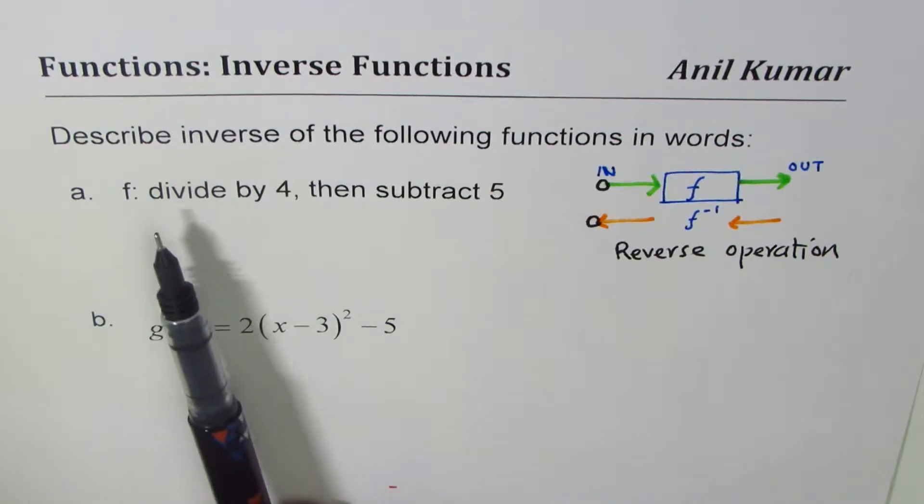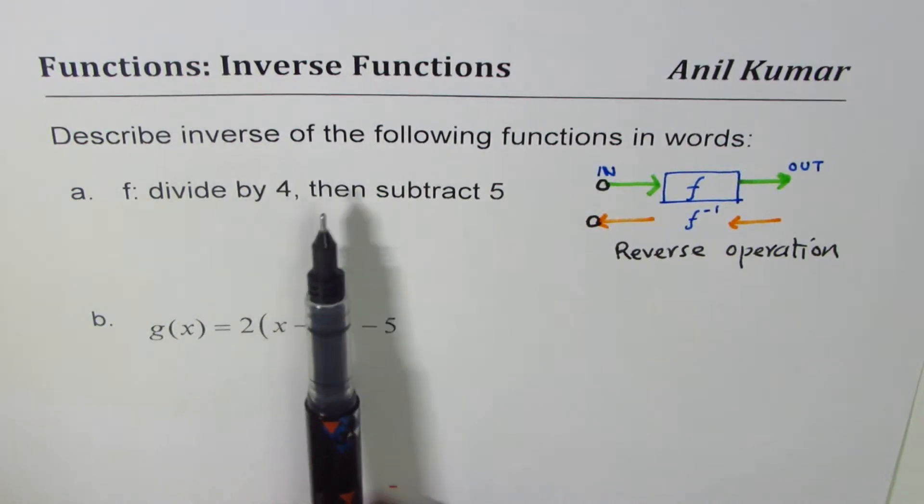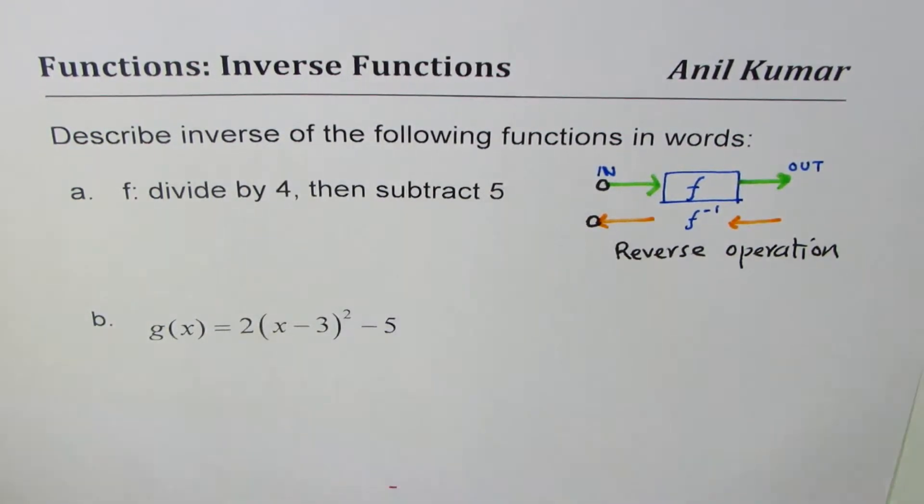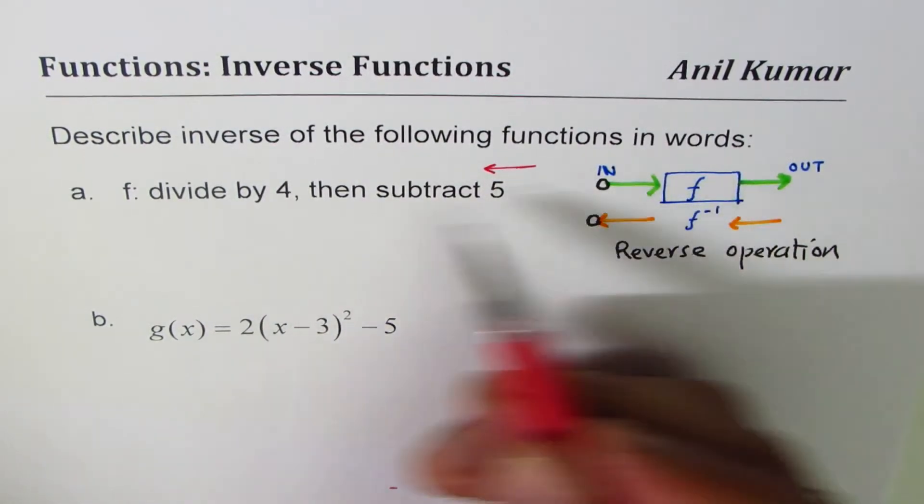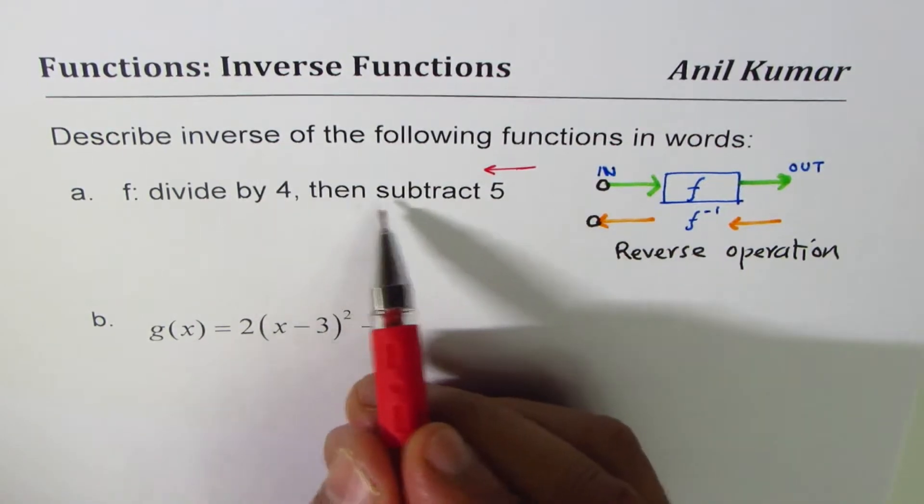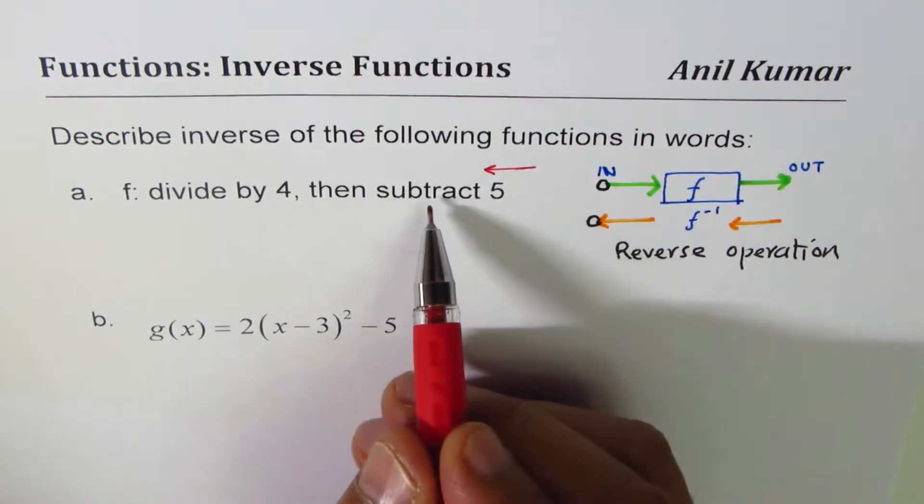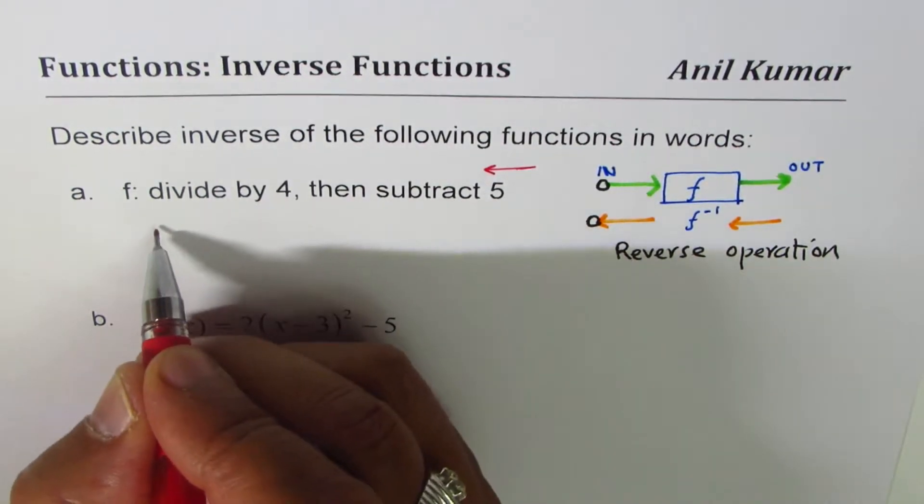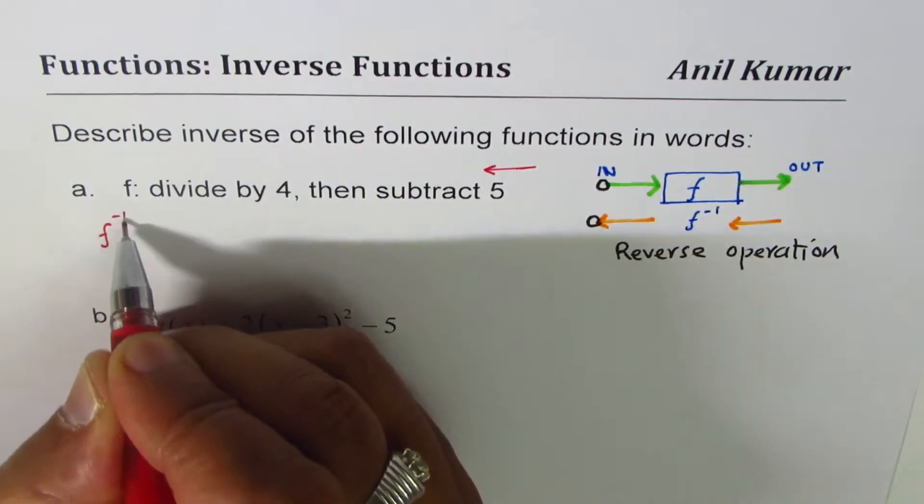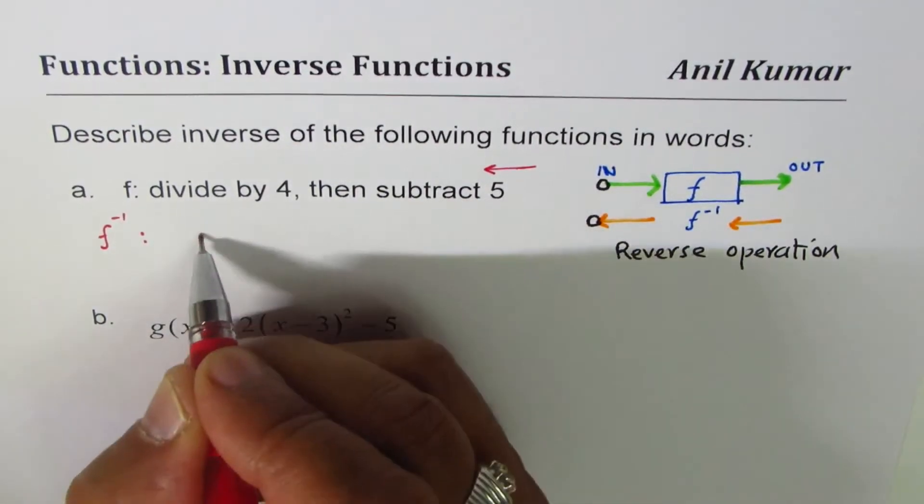Let's do it. Divide by 4, then subtract 5. Now let's read from this side. So the reverse operation is, what is reverse of subtract 5? Add 5, right? So we say, so the inverse will be add 5.